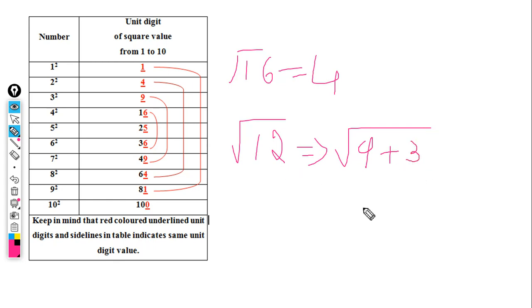For example, take the square root of 10. You write it as √(9+1), which equals 9 plus 1. The square root of 9 is 3. Then take 1 and divide by double of 3, which is 6. So we get 1 by 6.